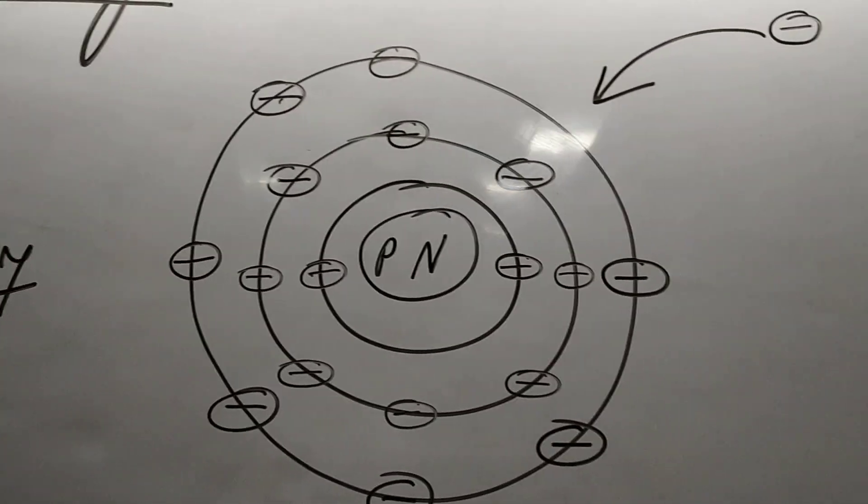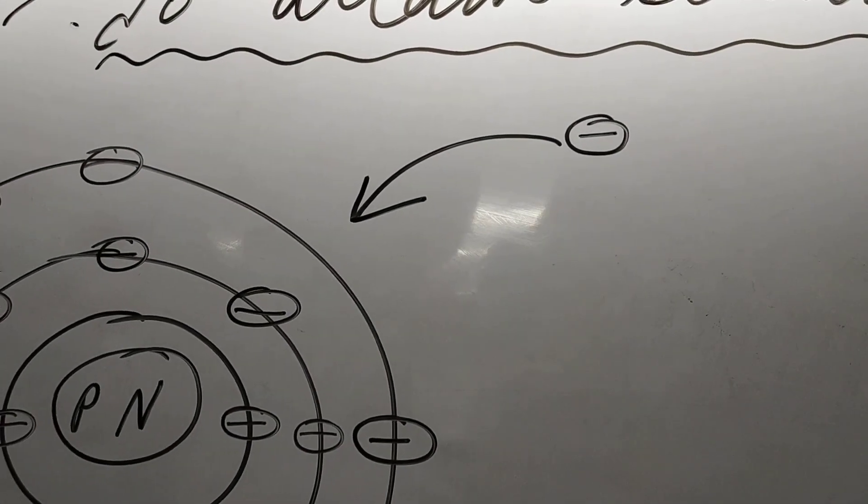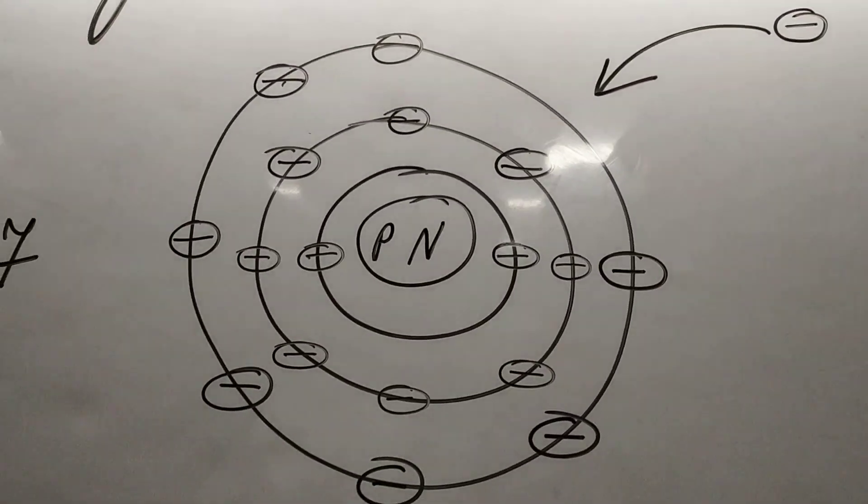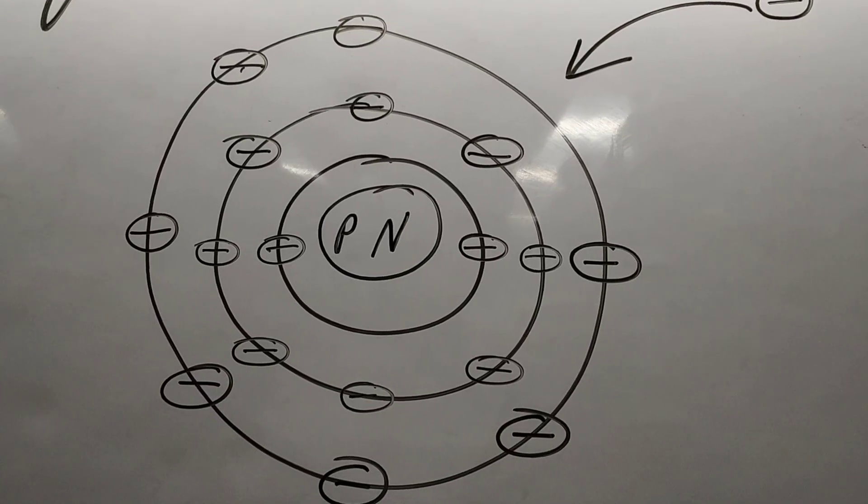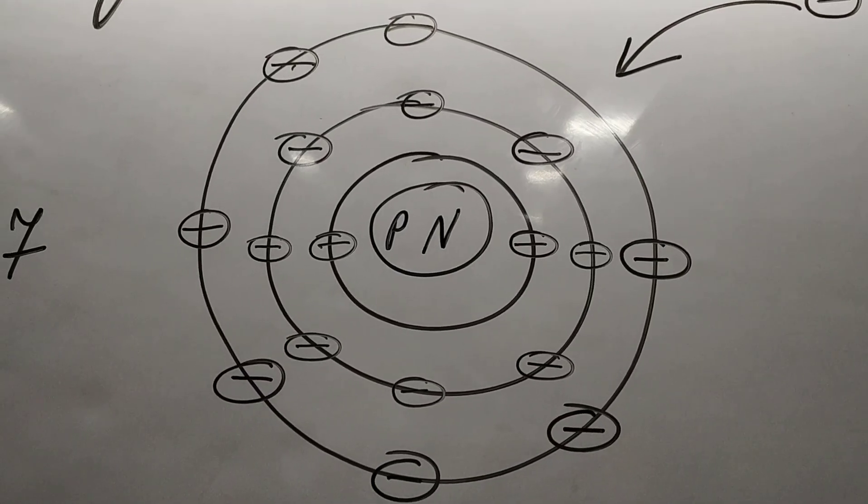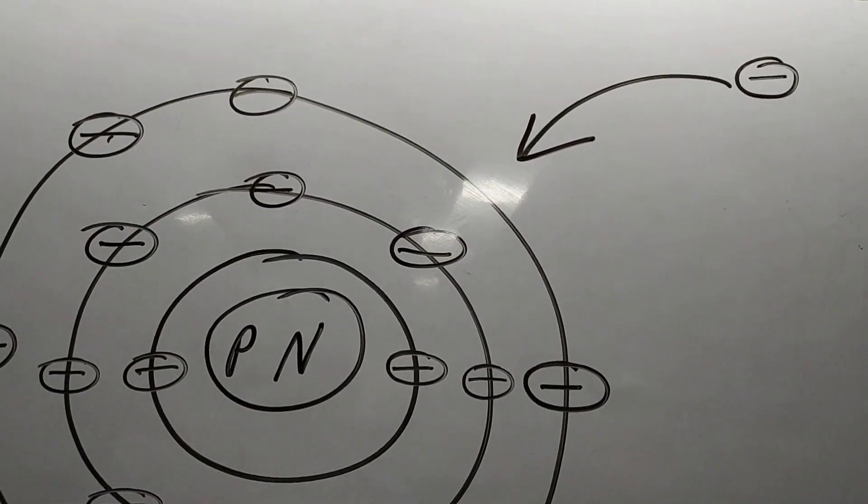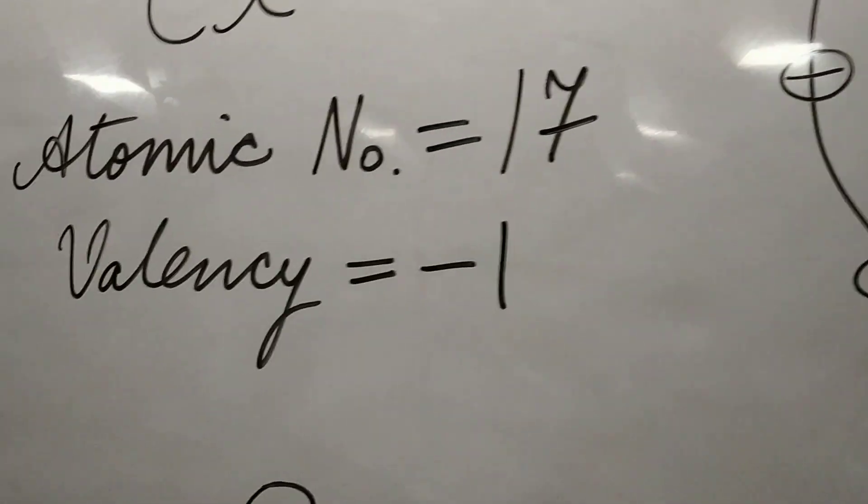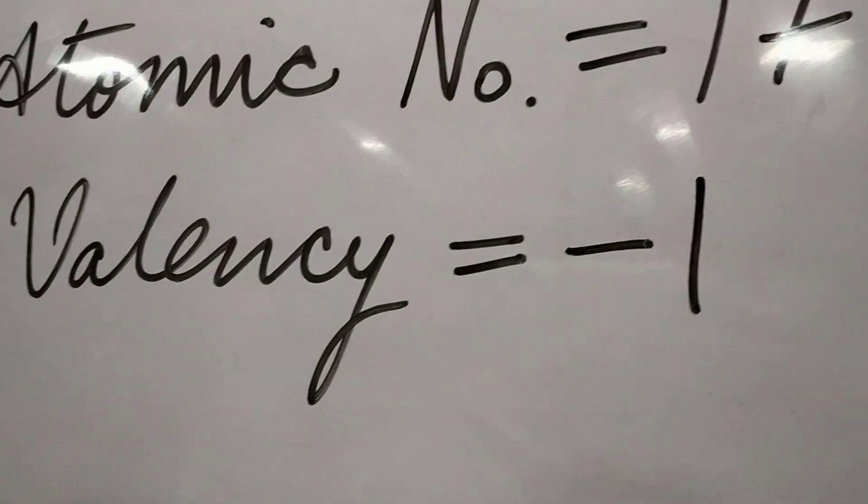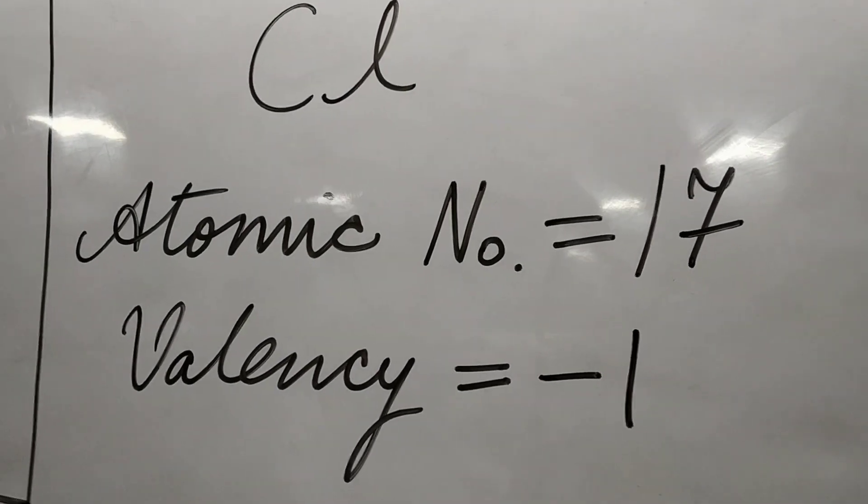For chlorine, it is easier to accept one electron or gain one electron rather than give away seven electrons. So it accepts that electron to complete its octet and become a chloride ion. Now one more electron is there in a chloride ion, so the overall charge is negative because one electron is more. So the valency for chlorine is minus one.